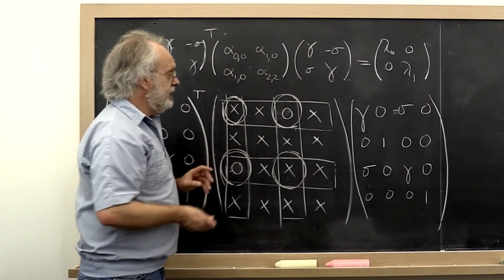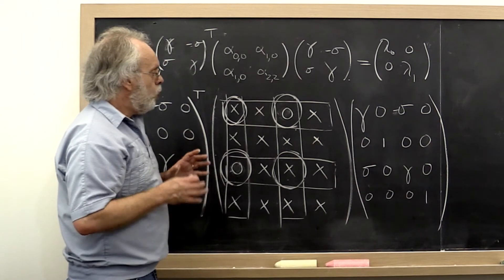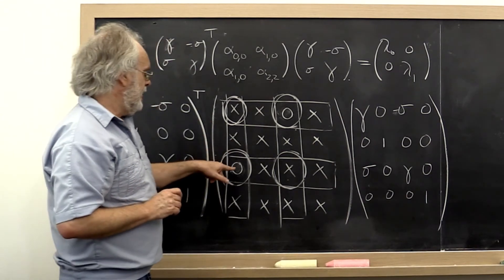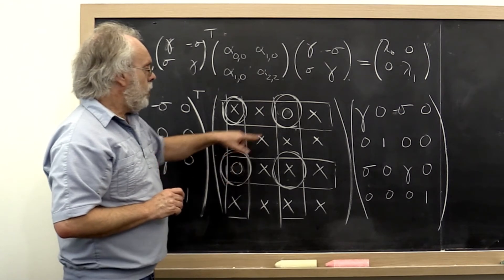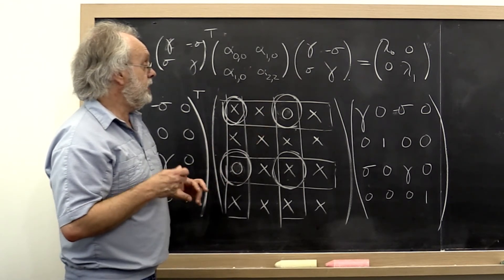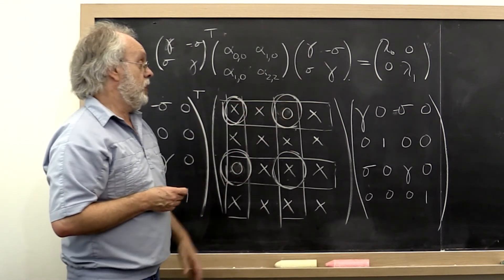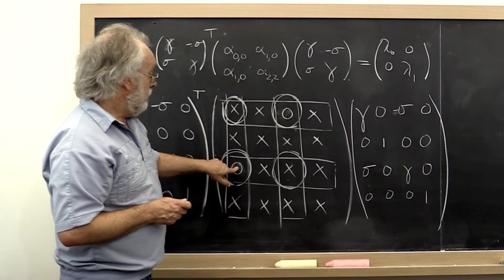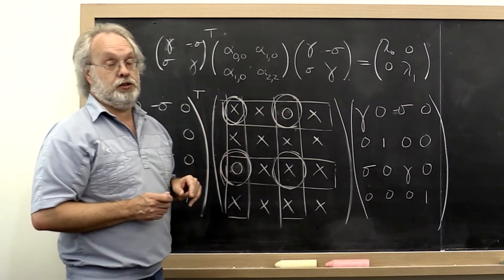And once you have done that, what happens, and you'll show this in the homework, is that the sum of the squares of the off-diagonal elements of this matrix is reduced by the sum of the squares of these two entries.